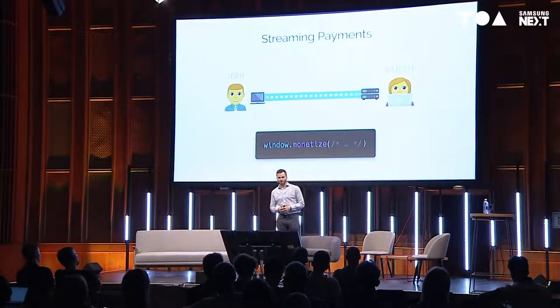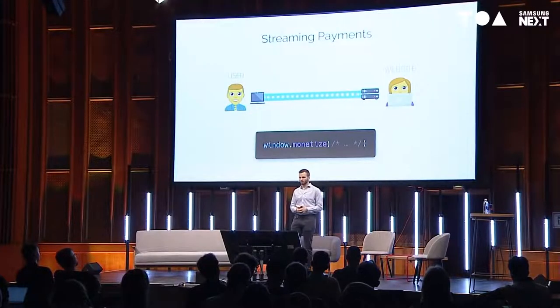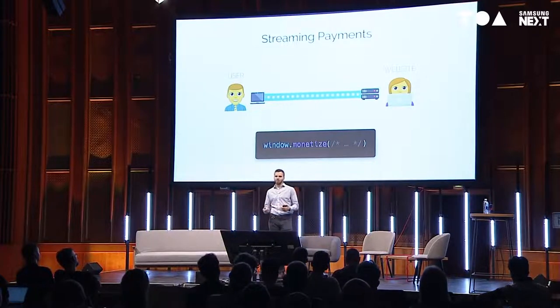The concept is streaming payments from you to the website running in the background as you browse. It's implemented via a browser API called window.monetize — the website calls that API, and the browser provides something similar to a WebSocket but payment-enabled. The website connects to itself or whoever it needs to pay. The amount the website can spend is limited by time: the longer you spend on the site, the more it can charge.